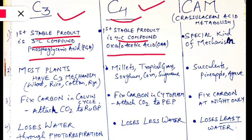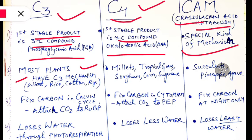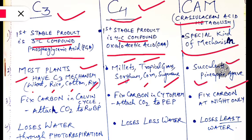CAM stands for Crassulacean Acid Metabolism, a special kind of mechanism we will learn further. Most plants — almost 85% — use the C3 mechanism. Examples of C3 plants include wheat, rice, cotton, and rye. C4 pathway examples include millets, tropical grasses, sorghum, corn, and sugarcane. CAM plants are mostly succulents such as pineapple and agave.